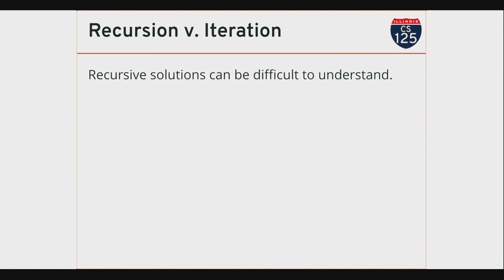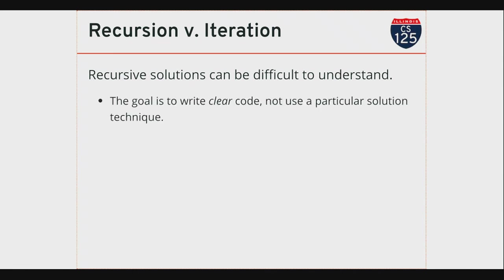The right place, as in many things in life, is in the middle ground—but that forces you to make judgment calls. Recursive solutions can be difficult to understand at times. Whenever you solve a problem as a computer scientist, your goal should always be to produce a clear, concise solution. The people who will be really impressed by your code will be the ones that use it and find it clear, well-documented, and intelligent.